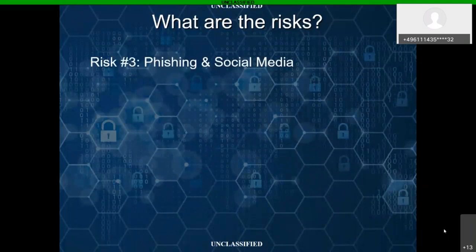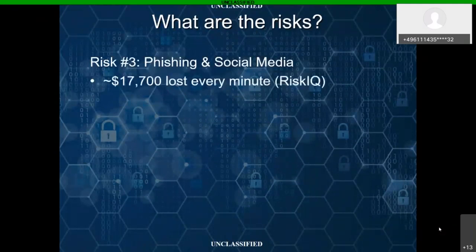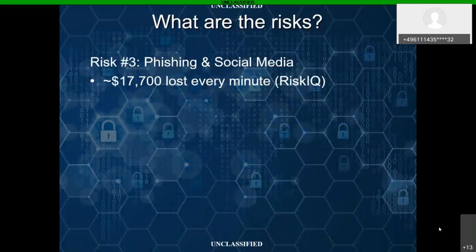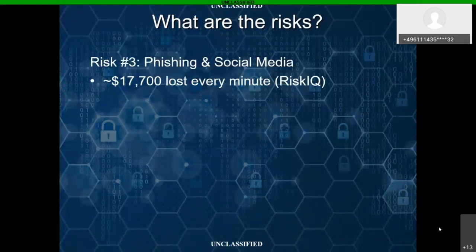Risk number three: phishing and social media. You can't talk about social engineering without talking about phishing. These are very real, very costly cybersecurity threats. We lose approximately $17,700 every minute, based on a study by RiskIQ, to phishing attempts and social media compromises. The textbook definition of phishing is a fraudulent attempt to elicit sensitive information from a victim in order to gain access to a network or accounts, gain access to data, or get the victim to perform an action such as a wire transfer. That $17,700 per minute works out to about $9.3 billion a year just in phishing.